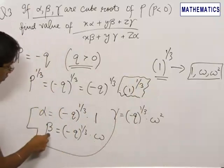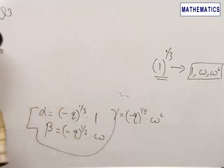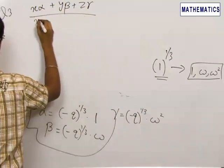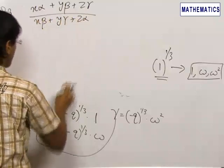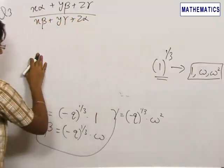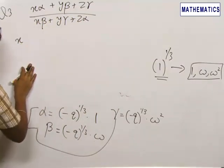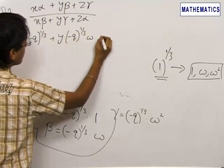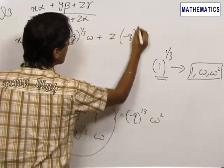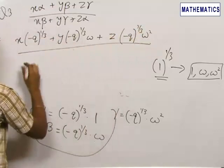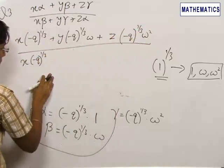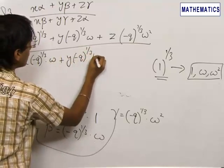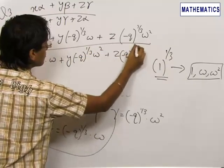Alpha can be written as -(q^(1/3))·1, beta as -(q^(1/3))·omega, and gamma as -(q^(1/3))·omega squared. Now we put the values of alpha, beta and gamma into the expression x·alpha + y·beta + z·gamma over x·beta + y·gamma + z·alpha, giving x·(-(q^(1/3))) + y·(-(q^(1/3)))·omega + z·(-(q^(1/3)))·omega squared in the numerator, and the corresponding terms in the denominator.